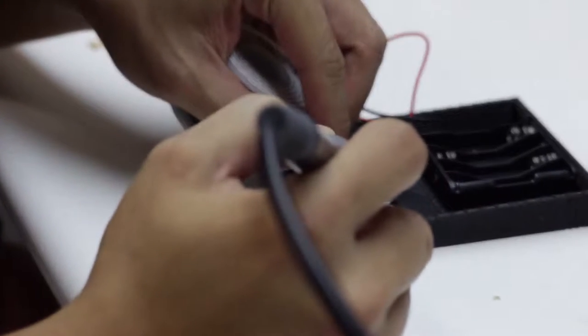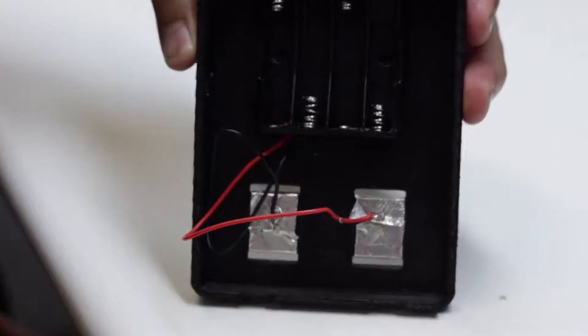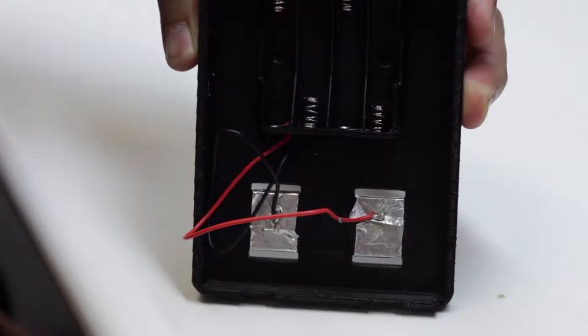After that, I'm going to solder the wires onto it. In this case, you're going to want the positive wires on the right and the negative wires on the left. And that's it.